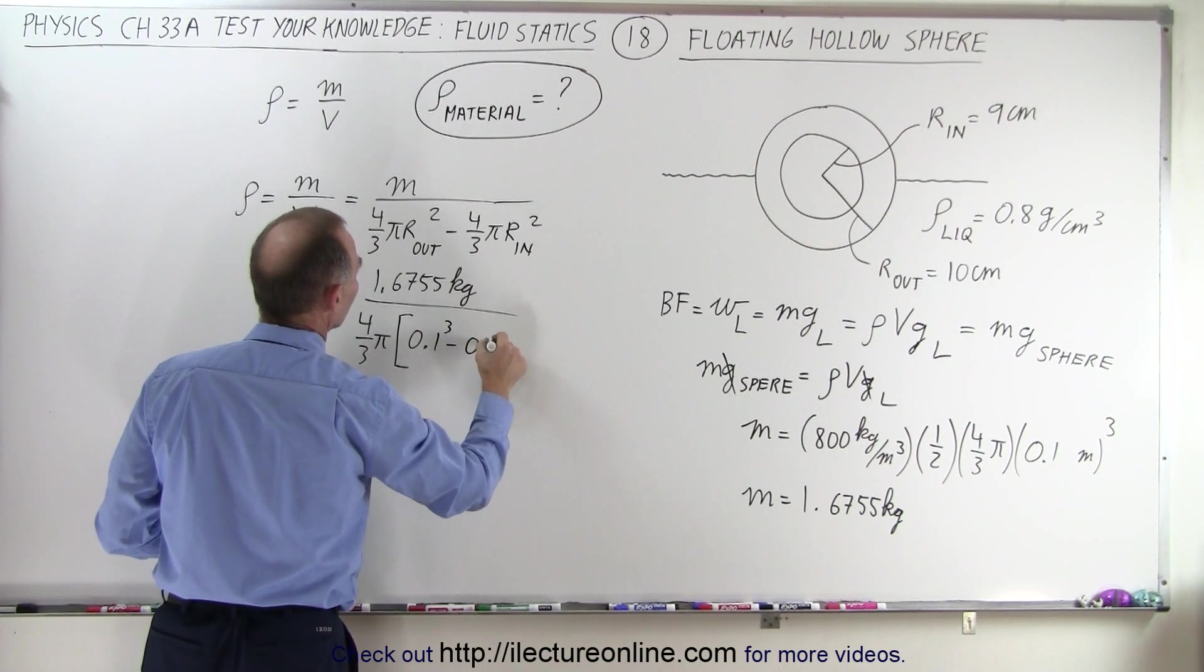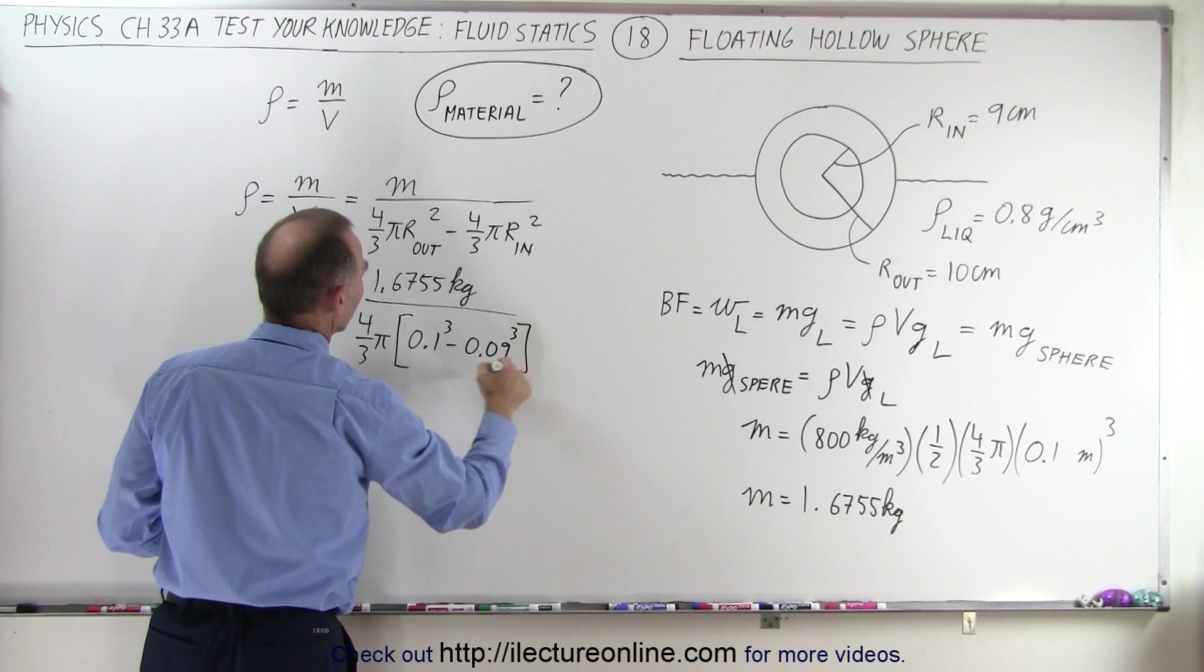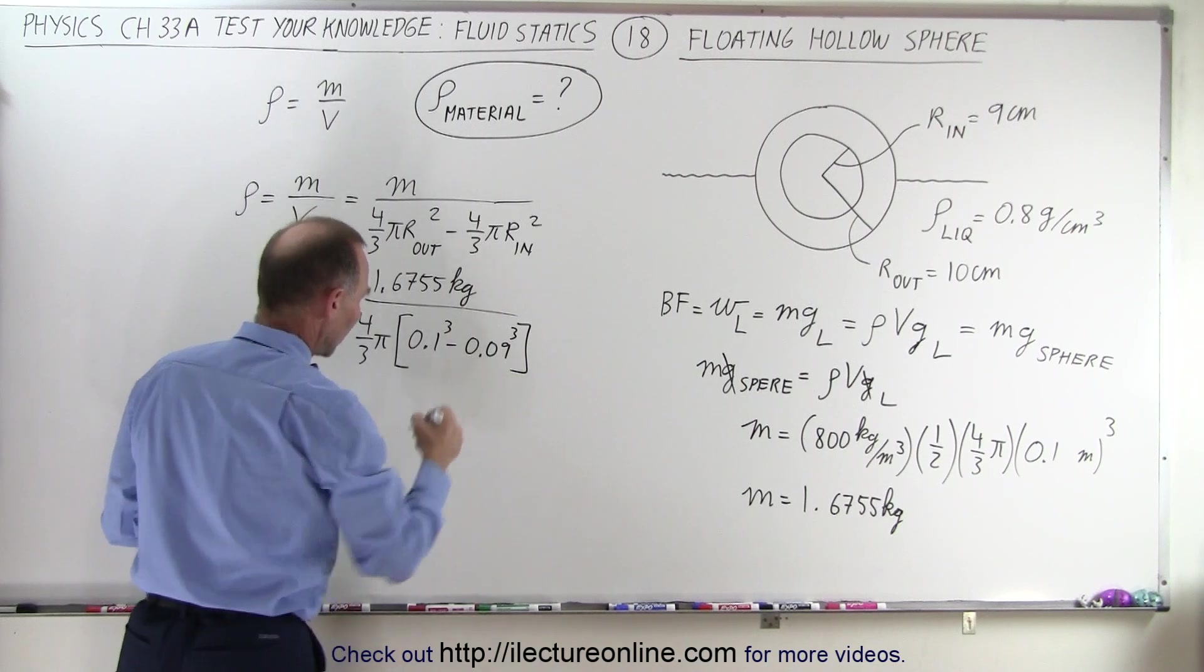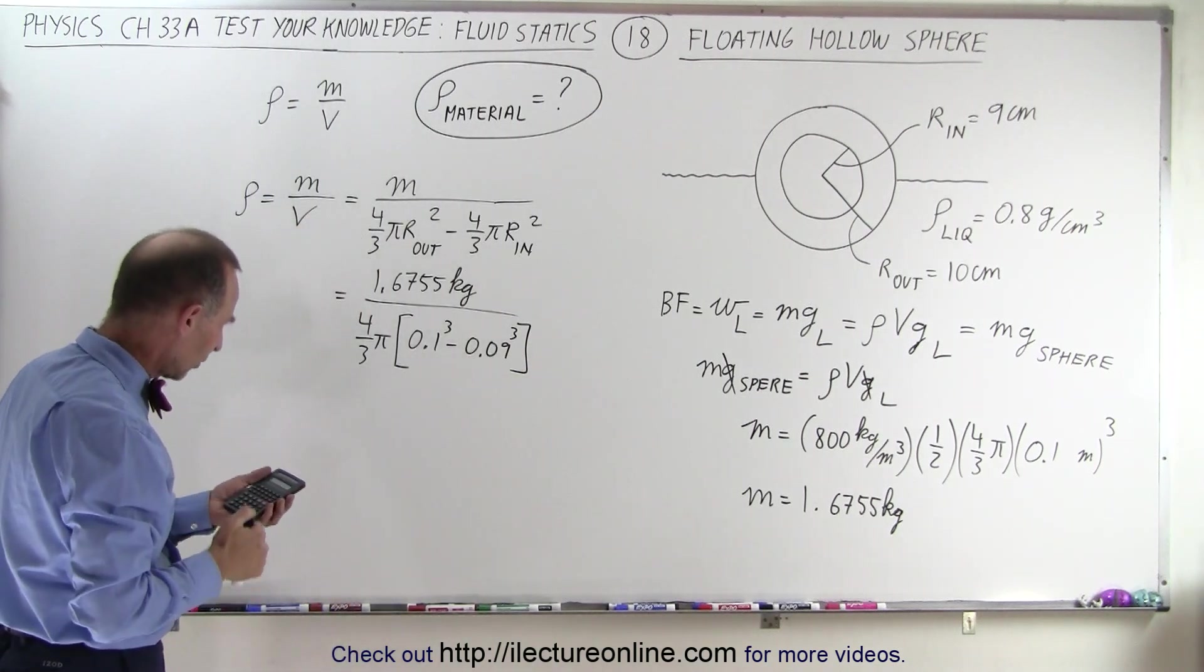That's the outer radius minus the inner radius cubed. So let's go ahead and do that.